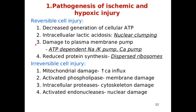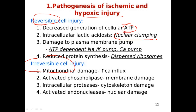Here is the pathogenesis of ischemic and hypoxic injury. In reversible injury: there is decreased generation of cellular ATP, intracellular lactic acid accumulation leading to nuclear chromatin clumping, impaired plasma membrane pumps (the ATP-dependent Na+/K+ pump and calcium pump), and reduced protein synthesis due to dispersed ribosomes.